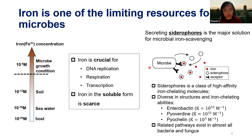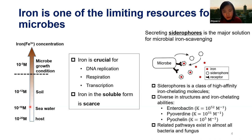Thanks for the question. Currently in the model we assume an iron-deficient environment, and in experiments we also deplete the culture of iron. In that extremely limited environment, most microbes will downregulate siderophore expression when more iron is available. When they get diffusible iron in an iron-rich environment, they stop making the costly siderophores.